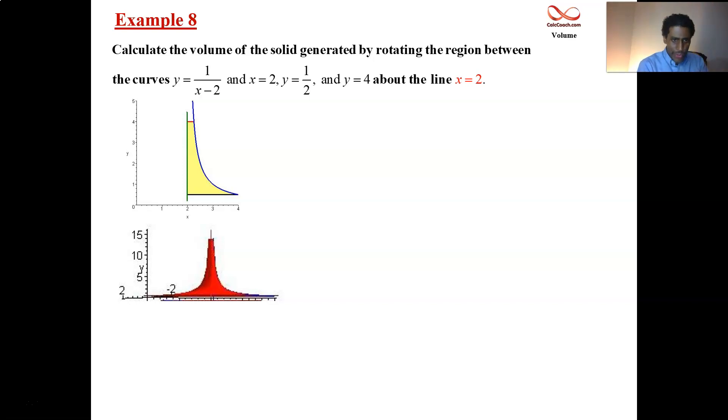And so x equals 2 is the vertical line that's there. We have two horizontal lines, y equals 1 half and y equals 4. Now the graph of y equals 1 over x minus 2 is just much like the graph of 1 over x because it's been shifted to the right two units. And so as you approach 2 from bigger numbers, it's going to go towards infinity. As you get and plug in higher numbers, it's going to end up going towards 0. And so it has the blue curve there is that graph.